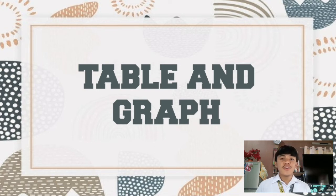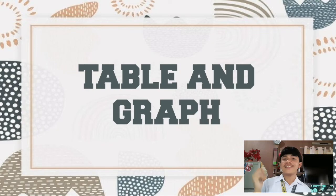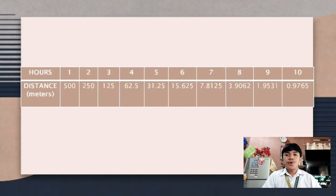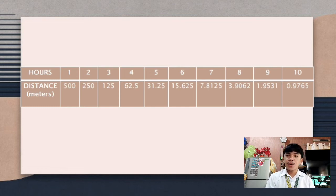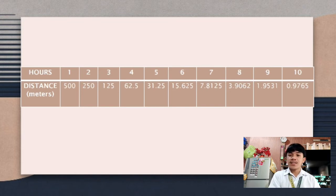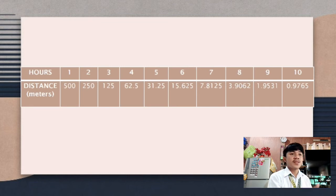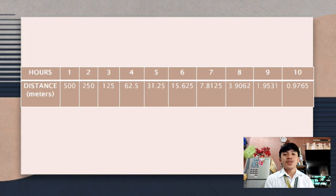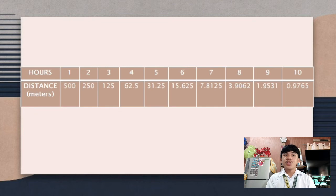After this solution, we are going to proceed with the table and graph. Shown on your screens right now is the table. As you can observe, as the rounds increase, the distance decreases. In the first round, the climber was able to reach 500 meters. In the second round, 250 meters. In the third round, 125 meters, and so on and so forth.